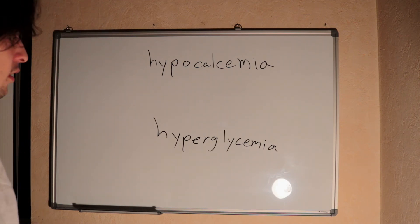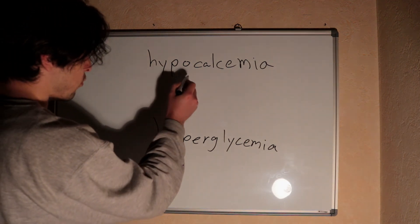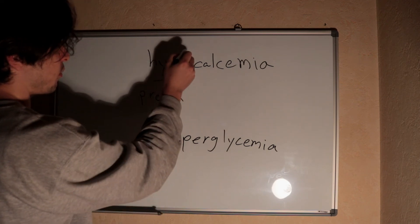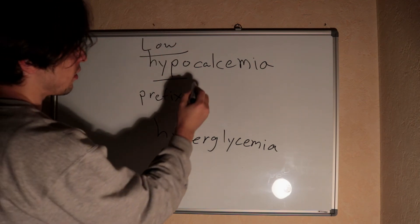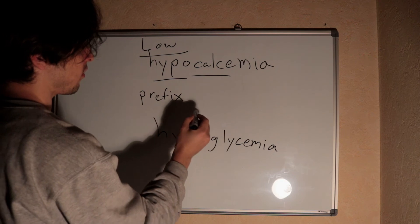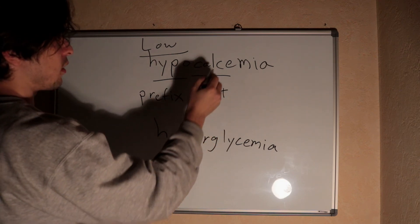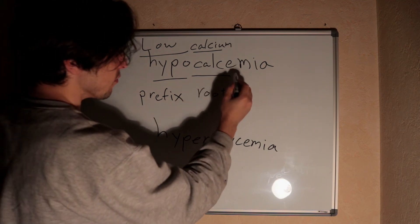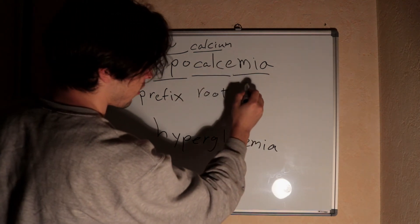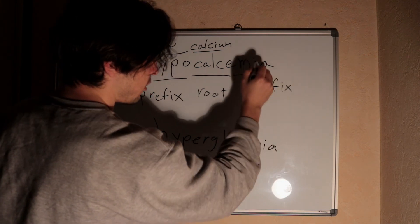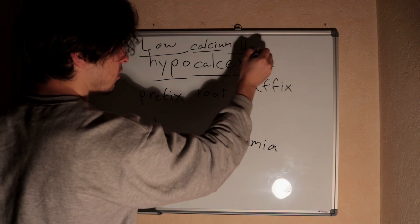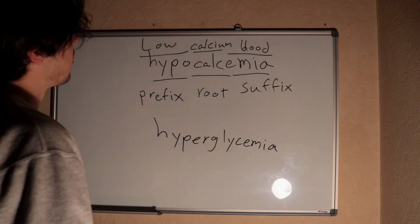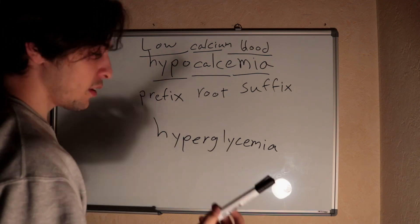Let's look at the full word hypocalcemia. 'Hypo-' is the prefix meaning low, 'calce' is the root meaning calcium, and 'emia' is the suffix meaning blood. So hypocalcemia means low levels of calcium in the blood.